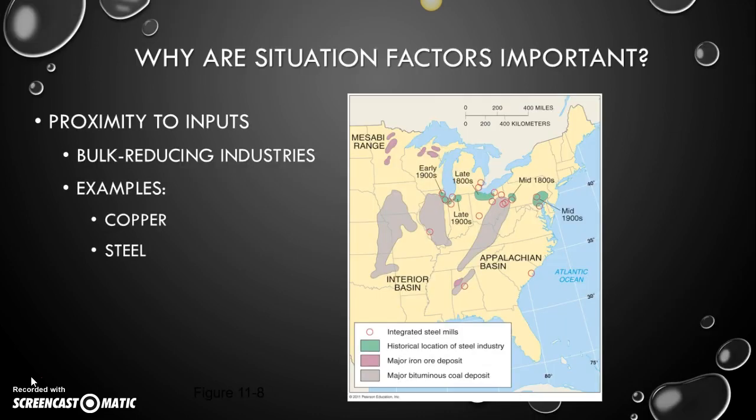I didn't put a slide in on this one, but let me remind you a little bit about what situation factors are. Situation factors describe how connected one area is to another area — for instance, modes of transportation and how easy it is to get into or out of an area. When we're talking about industrial location, we're really talking about how easy it is to get the resources that we need, particularly natural resources.